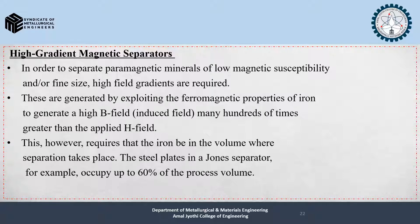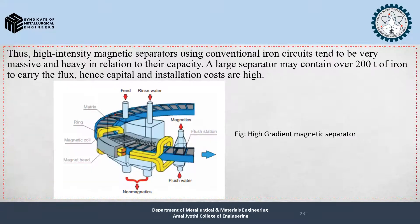The steel plates in a Jones separator, for example, occupy 60% of the process volume. Thus, high intensity magnetic separators using conventional iron circuits tend to be very massive and heavy in relation to their capacity — a large separator may contain over 200 tons of iron to carry the flux. Hence, capital and installation costs are very high.